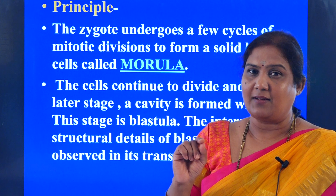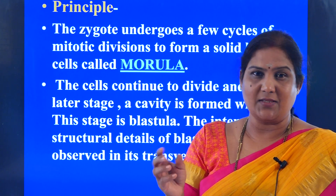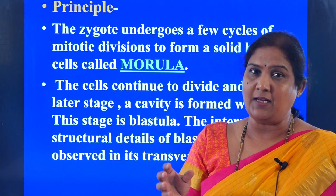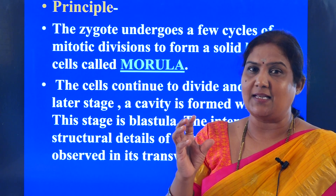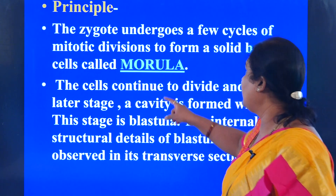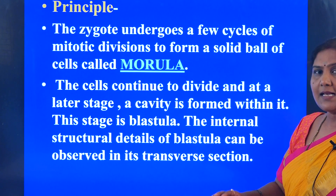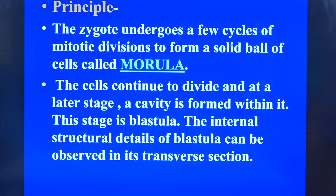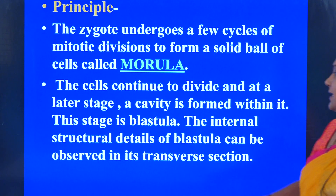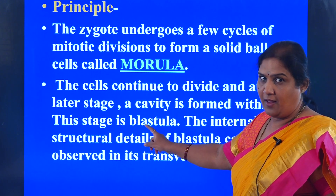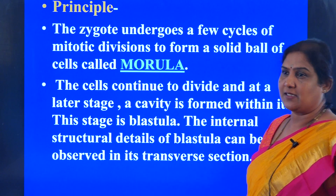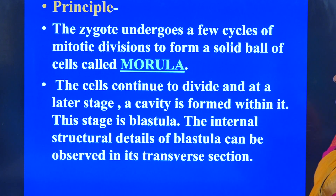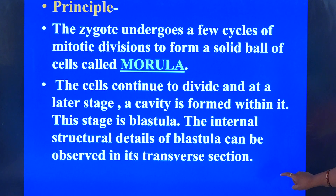After the fifth cleavage onwards, the first solid ball of cells forms an embryonic stage called the morula. The cells continue dividing and in the later stage form a cavity-bearing embryonic stage called blastula in frogs, and blastocyst in human beings. The internal structural details of this blastocyst can be observed in its transverse section.